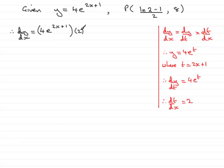So just tidy this up. 4 times 2 is 8, so we have that dy/dx is 8e to the 2x plus 1.